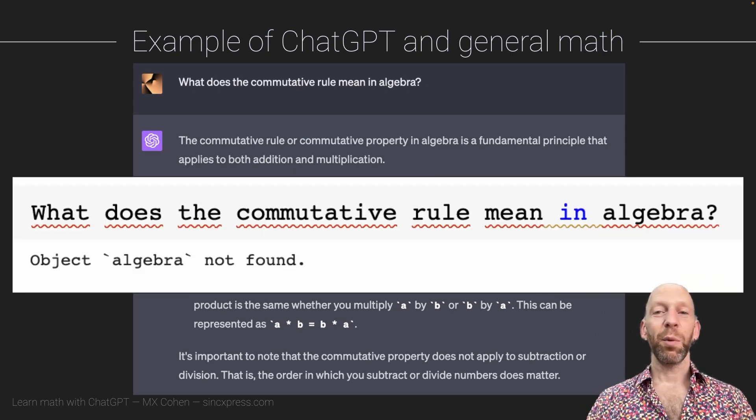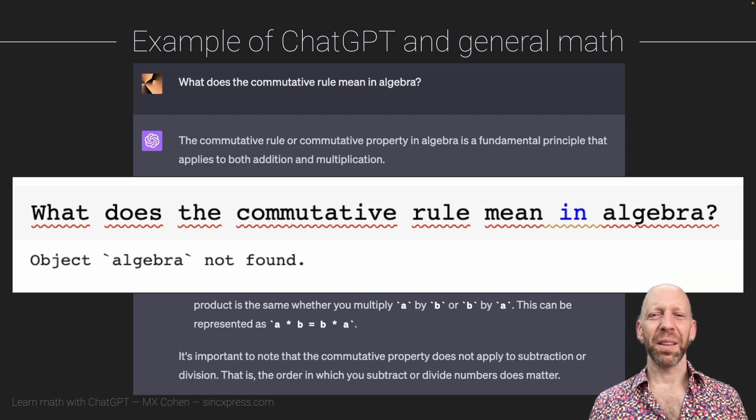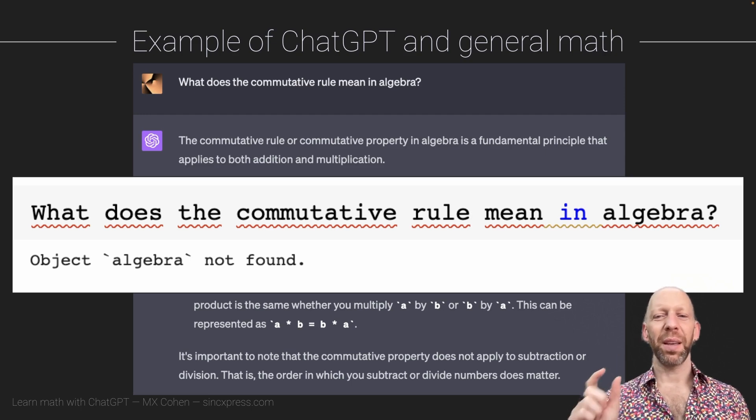And then I asked the same question with exactly the same wording in Python, and the answer is nothing. Python has no concept of what the commutative rule means. Python doesn't even know how to parse the text that I was writing. It gave me an error about an object algebra not being found, but that's just because it was looking for the keyword in.